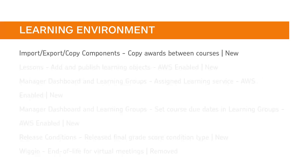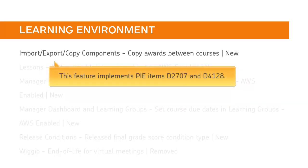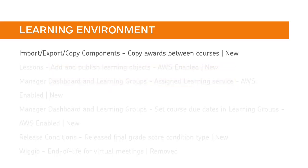Awards and their release conditions can now be copied between courses, allowing for awards to be reused between courses and sections. This feature implements PI items D2707 and D4128.